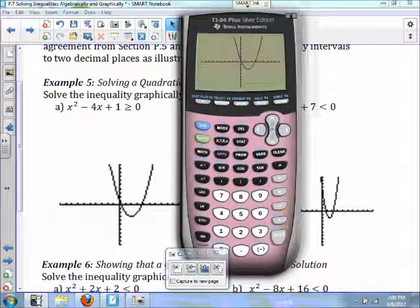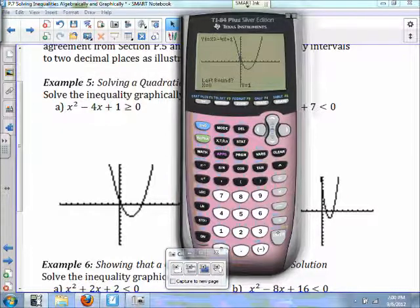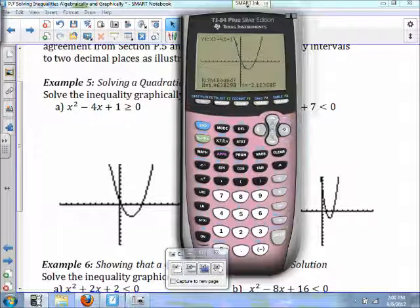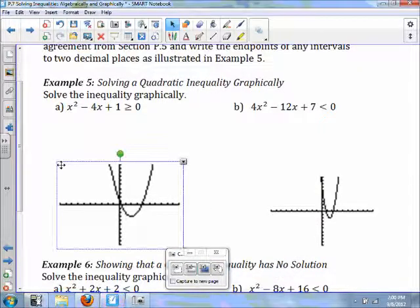We need to find our zeros. The way you do that is second trace. We're going to go left of where I think the zero is, we're going to go right of where I think the zero is. And again, make sure one's on the top of the x-axis and one's below it. So that means 0.27.